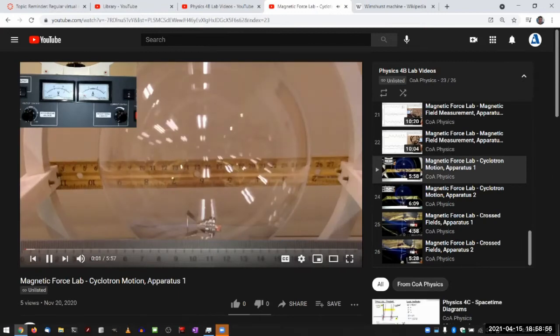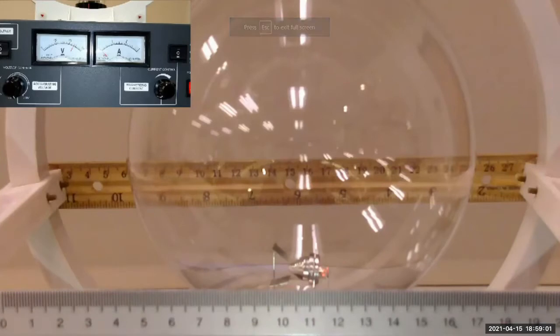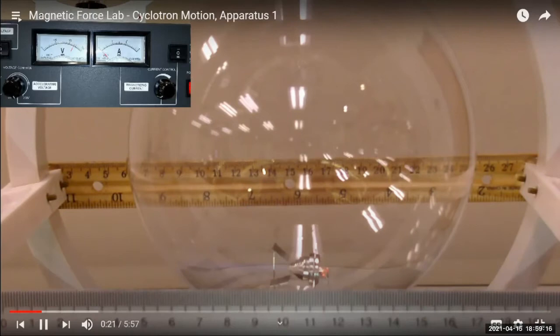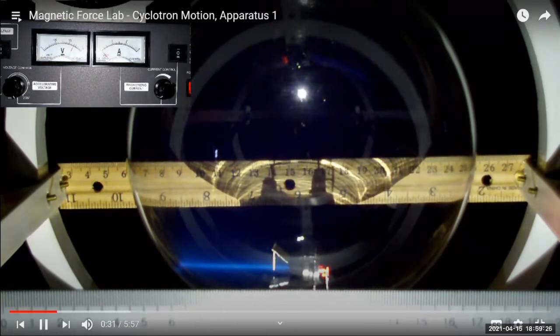In this video, we will measure the cyclotron motion applying different amounts of accelerating voltage and magnetic coil current. This is the first video using apparatus one. The electron beam is on right now at the maximum accelerating voltage, but it's not visible because the room light is too bright. Let me darken the room. All the lights are off, except for the one torch flashlight on the video camera that's recording the voltmeter and ammeter.